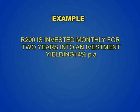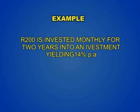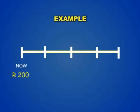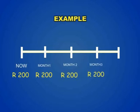Let us use an example to illustrate. 200 Rand is invested monthly at 14% per annum for two years. What will its value at maturity be, or its future value? There are two ways we can calculate this. The first way, we could use a timeline. We invest 200 Rand, and in one month's time we add 200 Rand, in two months' time another 200 Rand, in three months' time another 200 Rand, and so on until we get to 24 months.